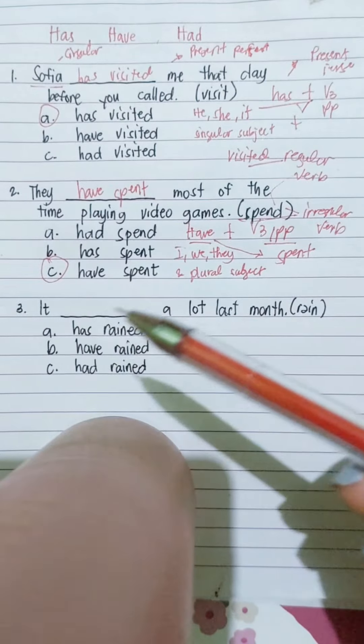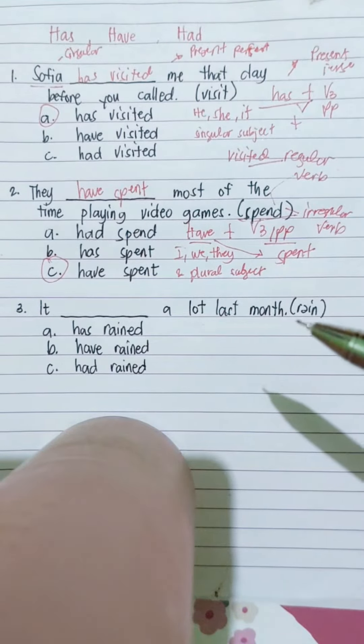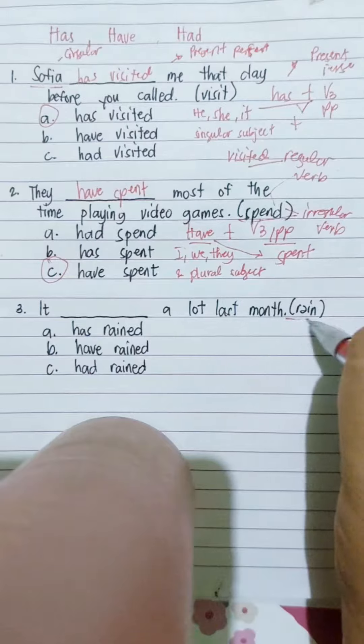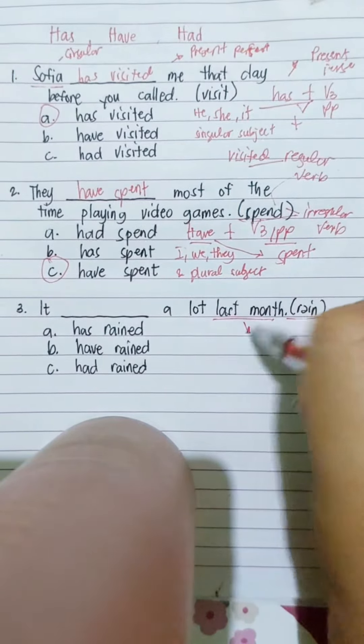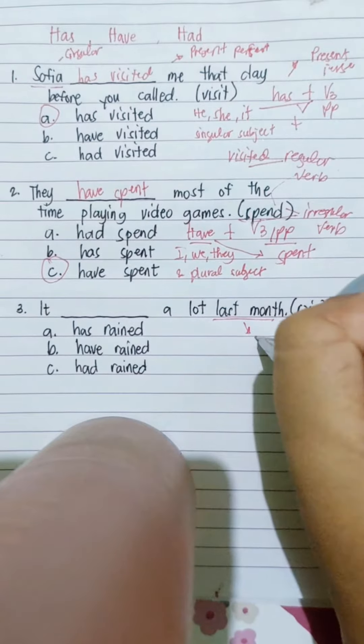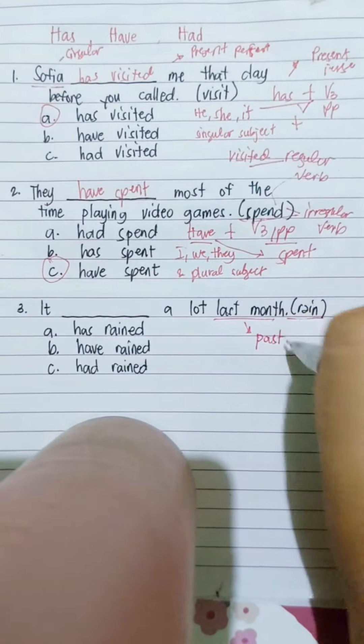The last one: It blank a lot last month. The verb here is rain. Your clue word here is last month, which means that this sentence is in the past tense.